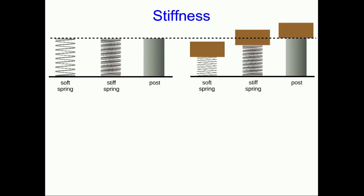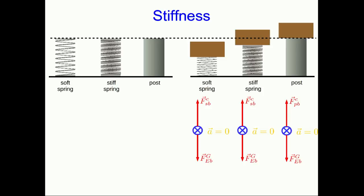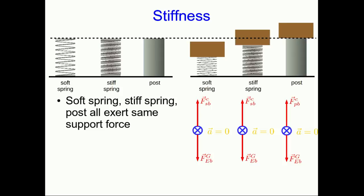Not all springs are the same. The main characteristic that distinguishes them for our purposes is something called the stiffness. You can probably already tell what the difference is between a stiff spring and a soft spring. For comparison, I'm going to compare them both with a post. If we put a brick on each one, all three can support the brick. The stiff spring has had to compress to do so, and the soft spring has had to compress more. But note that all three bricks are stationary, so acceleration is zero, and all three support forces are equal to the gravitational force on the brick. The soft spring, stiff spring, and post all exert the same support force. The difference is that the soft spring has had to deform much more to be able to provide a force that large.